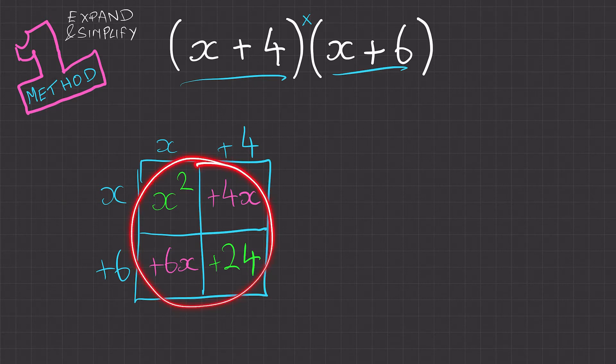So now we need to write all these terms out. So we have x squared plus 4x plus 6x plus 24.